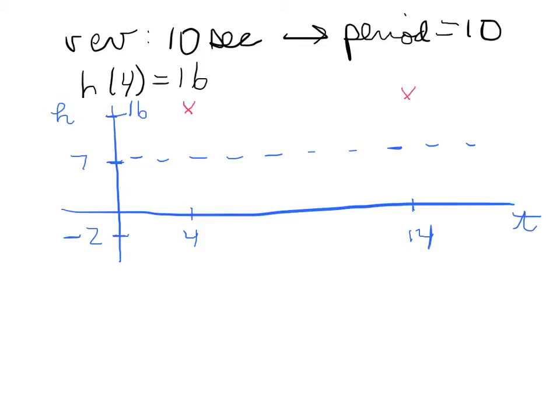Now, halfway between these must be the lowest point. And halfway between 4 and 14 is 9, right? So at 9 seconds, it's got to be at its lowest point, which is minus 2. And then halfway between those points, it's right at the midline. And so what we have is the graph that looks something like that.